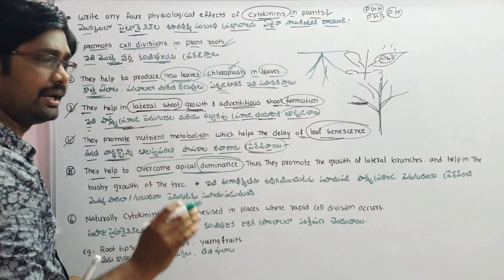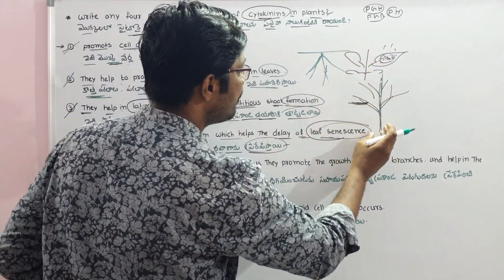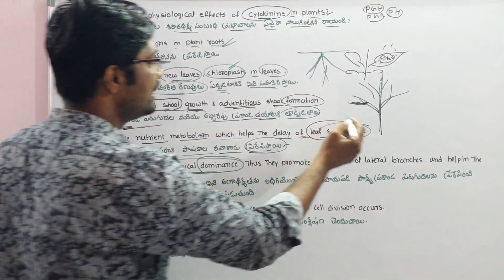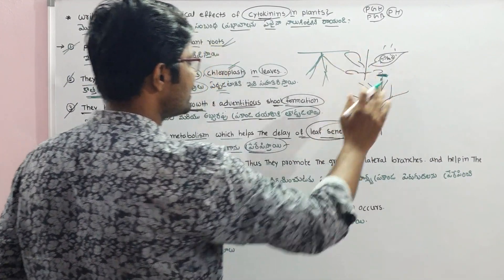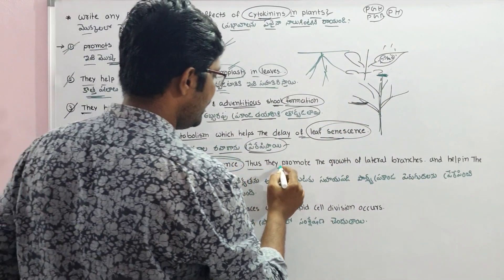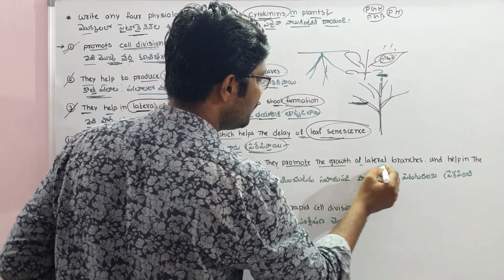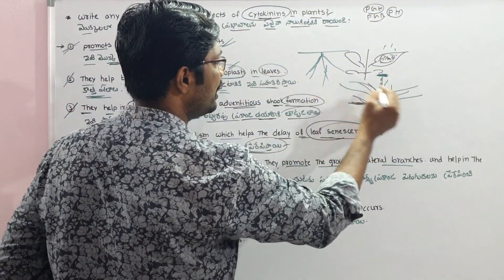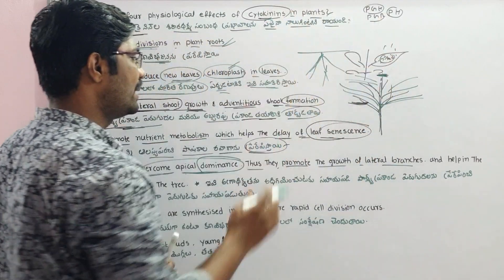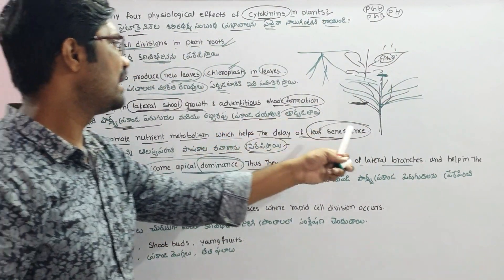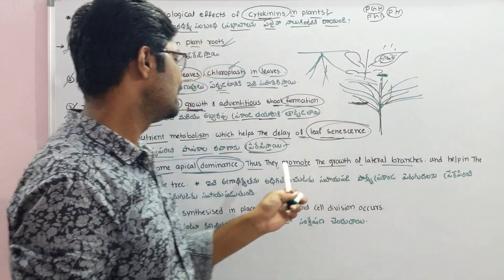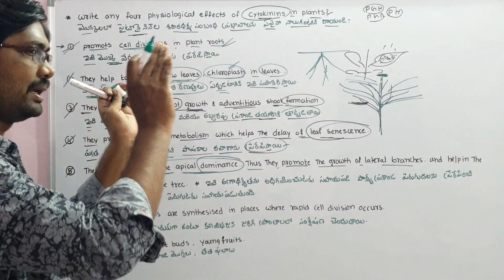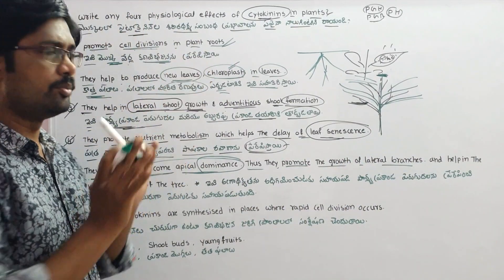Cytokinins also help to overcome apical dominance. They promote the growth of lateral branches by suppressing apical dominance, allowing lateral branch growth. This results in bushy growth of the plant, as more lateral branches are produced.